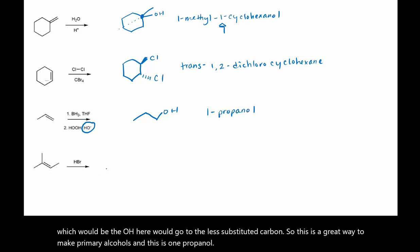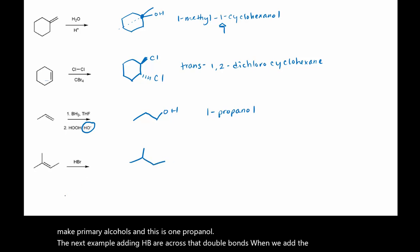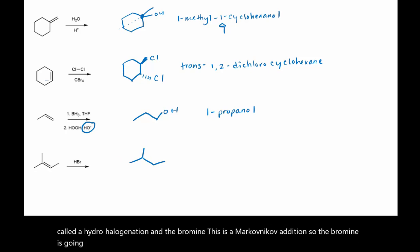The next example is adding HBr across that double bond — that's called a hydrohalogenation. The bromine, this is a Markovnikov addition, so the bromine is going to go to the more substituted carbon, which would be here. But you do have to watch for some rearrangement.